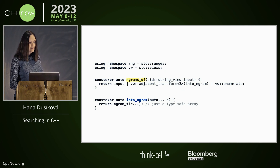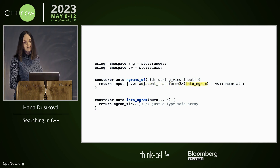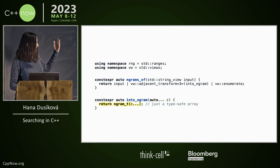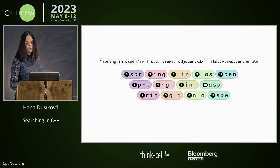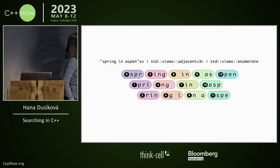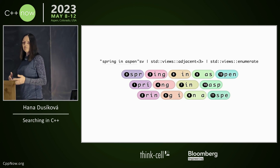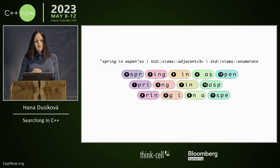So you have a function ngramOf, which takes string_view and pipes it into hsnt transform, which will transform it into ngram type and then you enumerate it. So you have ngram and it's just an array. You have position in the range of the ngram, so you have a position and ngram.